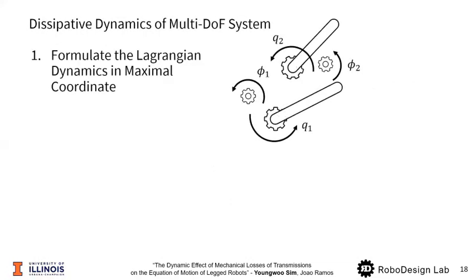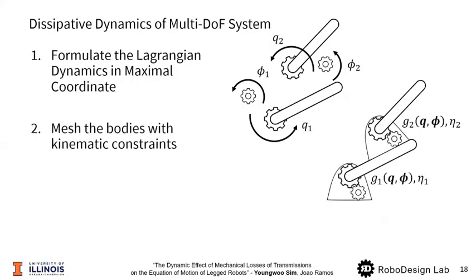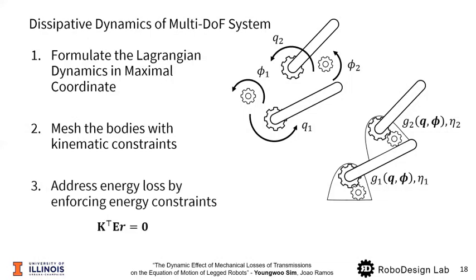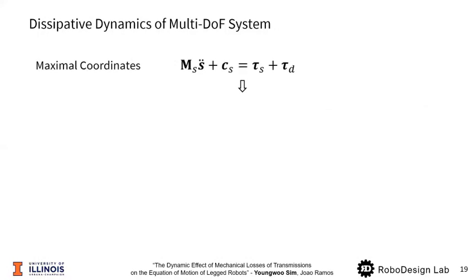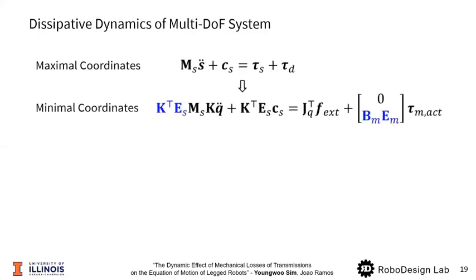To give high-level overview, first formulate the Lagrangian dynamics in maximal coordinate, and then mesh the system with kinematic constraints, which basically formulates transmissions. And then, in that transmission, there's energy losses. So, we enforce energy constraints to the system equation.